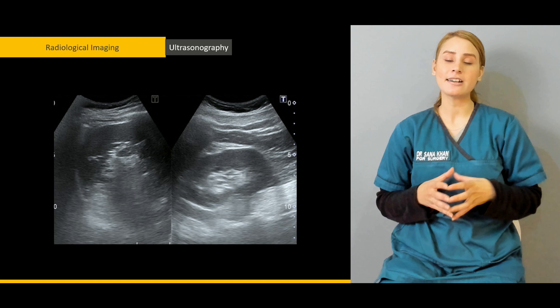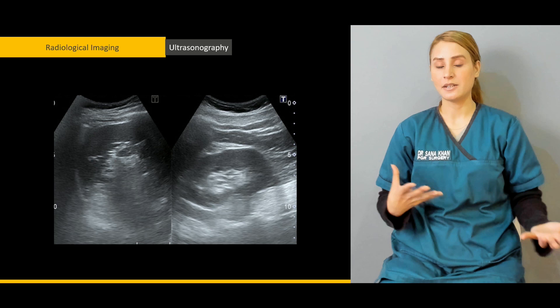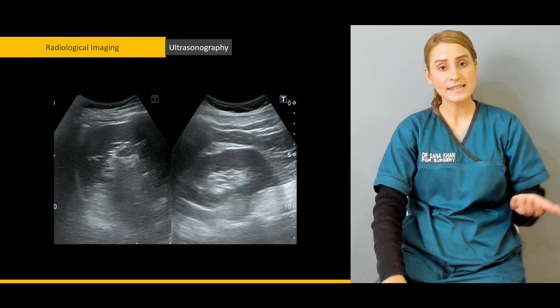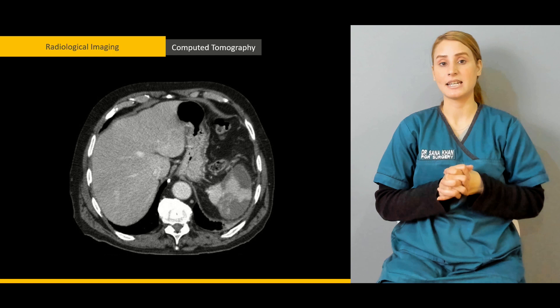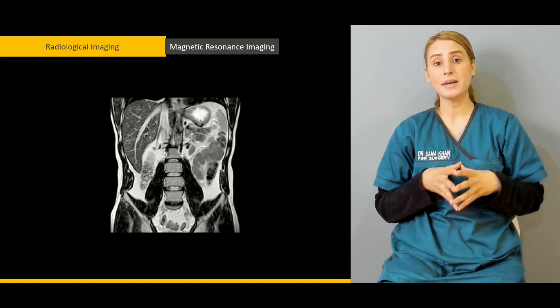Then we'll be talking about the different investigations which are usually going to help you investigate a case of splenomegaly, like myeloproliferative disorders and other hemolytic anemias, and also the important investigations, especially the radiological investigations. What is the significance of ultrasound and what information you are going to get from it? And what is the significance of computed tomography, especially when you're suspecting splenic artery aneurysms and splenic infarction — what important information can be given to you by CT?